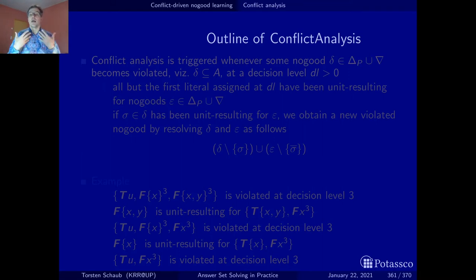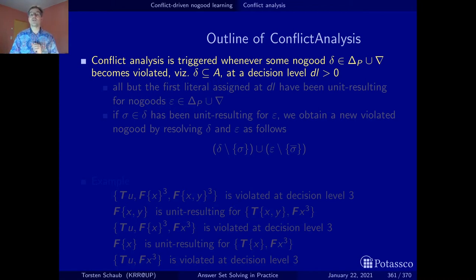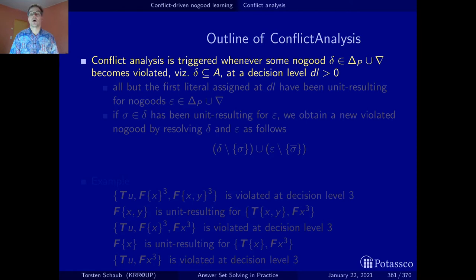Conflict analysis is triggered once a no-good has been violated — that is, there is a no-good among the completion and the dynamic no-goods that is completely contained in the assignment, and this at a decision level greater than zero. Because if the conflict occurred at decision level zero, this indicates that our original problem is unsatisfiable.